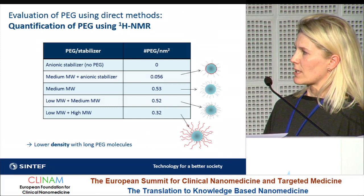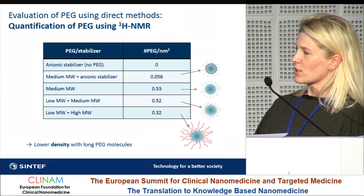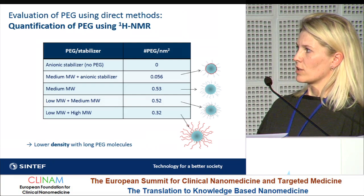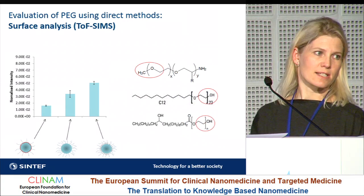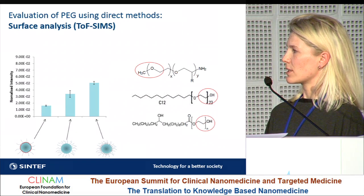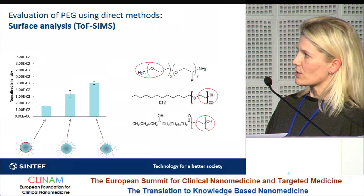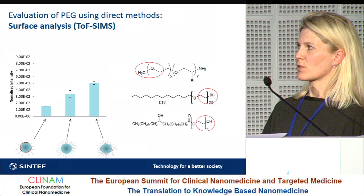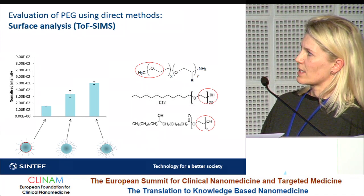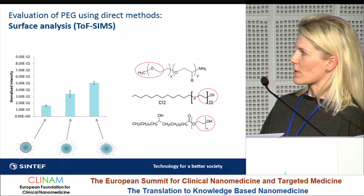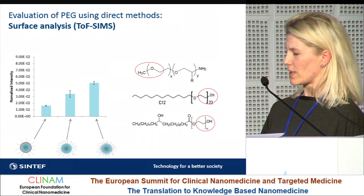What we see is a clear difference in the amount and density of PEG on the particles depending on which strategy we use. We further see that lower density is gained when we have long PEG molecules, probably due to steric hindrance. Another direct method we tested is surface analysis by ToF-SIMS, performed by Martin Davis's group at the University of Nottingham. This is a qualitative comparable method, and we use different chemical groups on the PEG to analyze what is on the particle surface — and we see the same trend as with NMR.